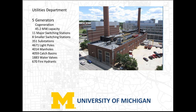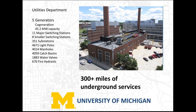We have five generators and a co-generation power plant with a capacity of 45.2 megawatts. There are 11 major switching stations, eight smaller switching stations, a number of substations, and almost 5,000 light poles. When you add manholes, catch basins, and water valves, there are almost 10,000 of those, plus 670 fire hydrants that we're responsible for. The underground utilities is quite significant — almost everything on campus is underground, and we've got over 300 miles of underground services that we maintain.